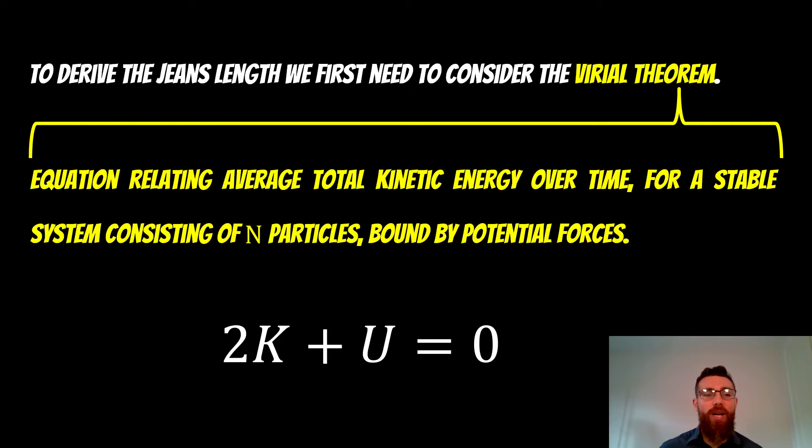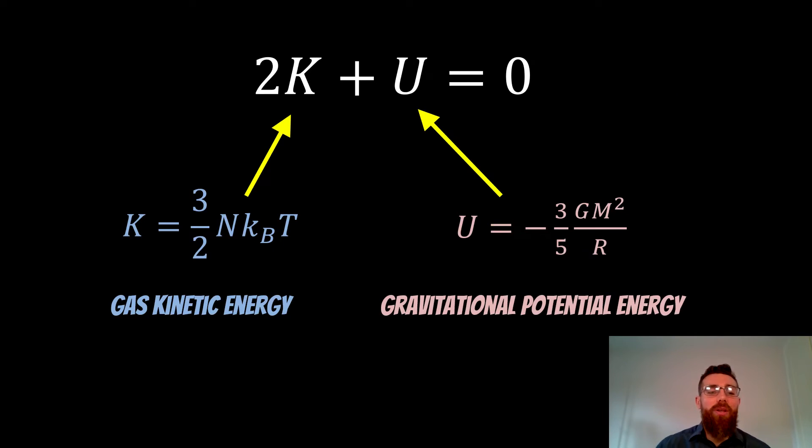This is an equation which relates the average total kinetic energy over time for a stable system consisting of N particles bound by potential forces, which is the gravitational force in this case. K is your kinetic energy of the gas, and U is your gravitational potential energy. We've got our gas kinetic energy for the K and gravitational potential energy for our U. We can put those into the equation and then arrange for some value R.